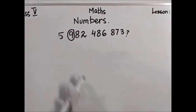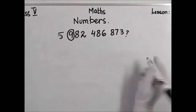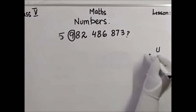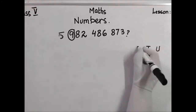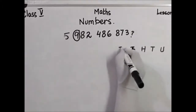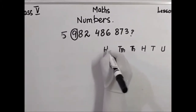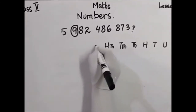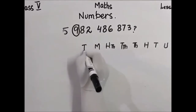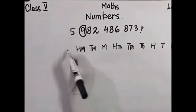How do we know the value of 9? First, we put the numbers in our place value chart: unit, 10, 100, 1,000, 10,000, 100,000, million, 10 million, 100 million, and billion.